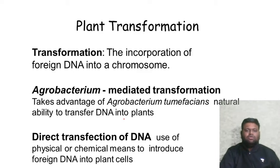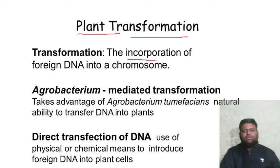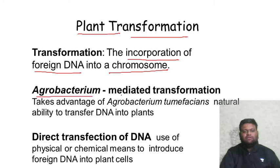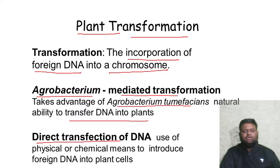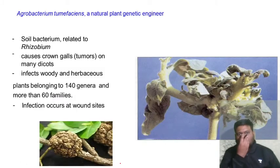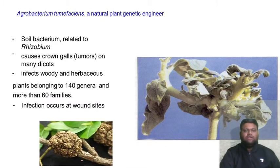Next we come to transformation by Agrobacterium tumefaciens. In transformation there is incorporation of foreign DNA into a chromosome. Agrobacterium-mediated transformation takes advantage of Agrobacterium tumefaciens' natural ability to transfer DNA into plants. There is also direct transfection of DNA using physical or chemical means to introduce foreign DNA into the plant cell. Agrobacterium tumefaciens is a natural plant genetic engineer — it is a soil bacterium related to Rhizobium.